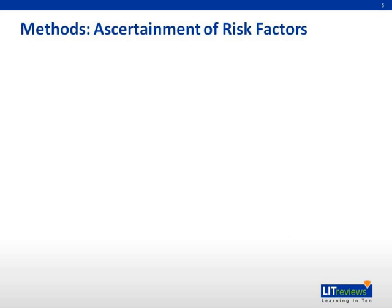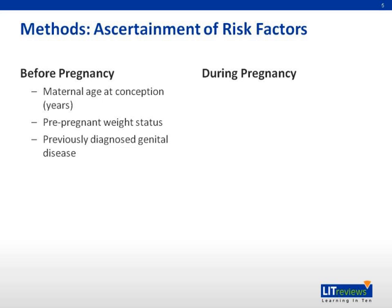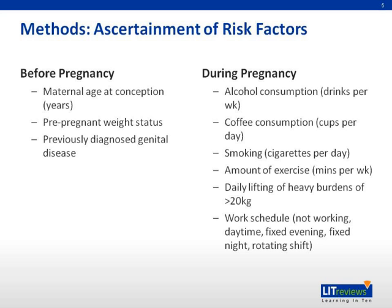Established risk factors that are potentially modifiable and possible to evaluate were identified from a literature review. A total of nine risk factors were identified, classified according to before pregnancy and during pregnancy. Before pregnancy criteria include maternal age at conception, pre-pregnant weight status, and previously diagnosed genital disease. During pregnancy, risk factors include alcohol consumption, coffee consumption, smoking, amount of exercise, daily lifting of heavy burdens of more than 20 kg, and work schedule.